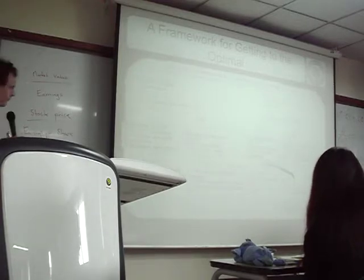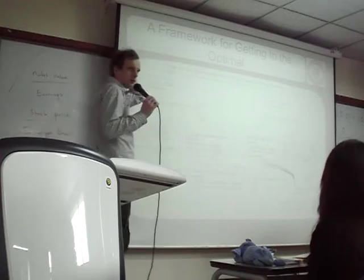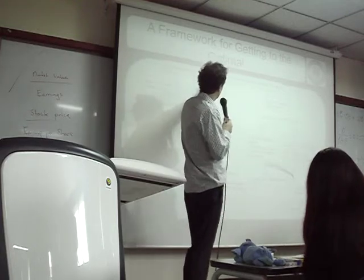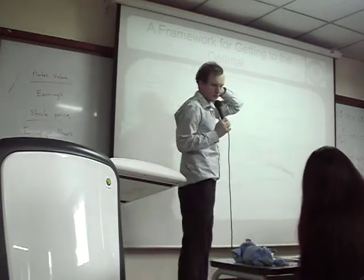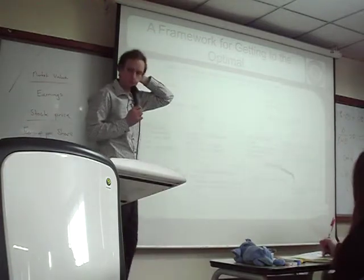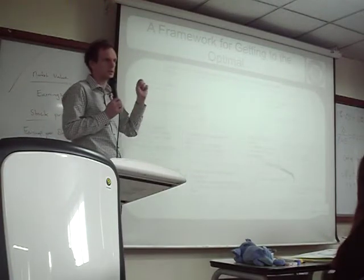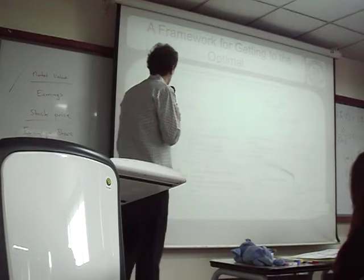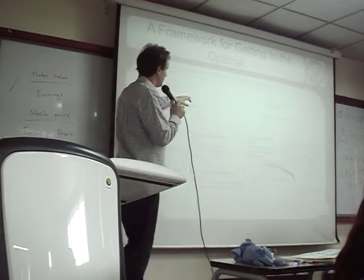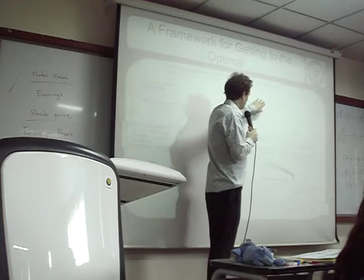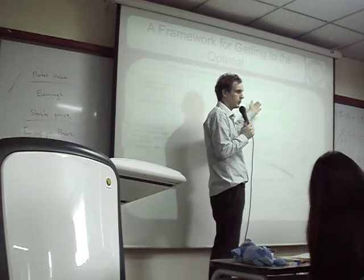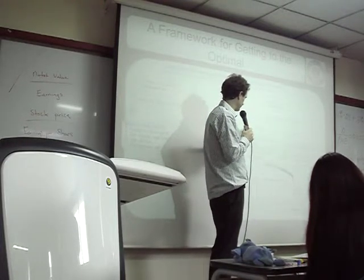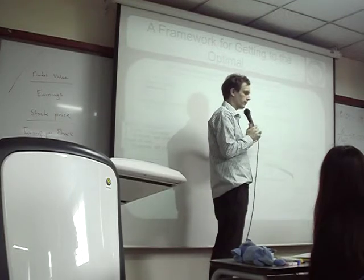This is a framework — a decision tree — for getting to the optimal debt ratio. First we ask: is the actual debt ratio greater than or less than the optimal debt ratio? In Disney's case, the actual is less than the optimal. Is the firm a takeover target? Do people want to take over Disney? If yes, increase leverage quickly — make the company look better in the short term for the takeover.